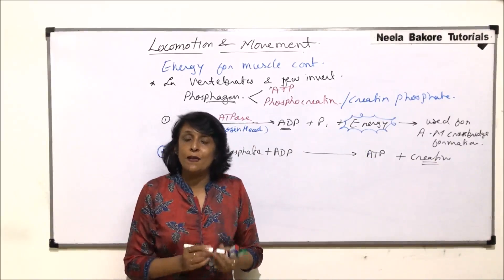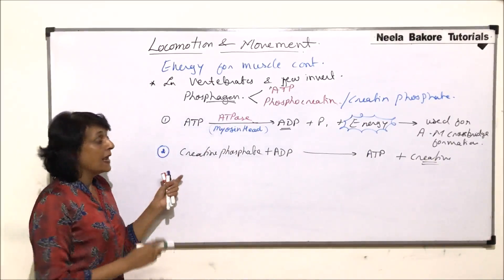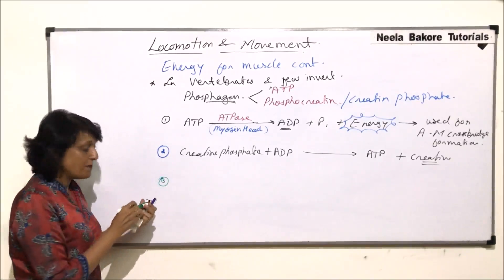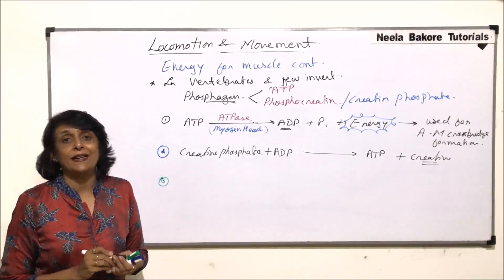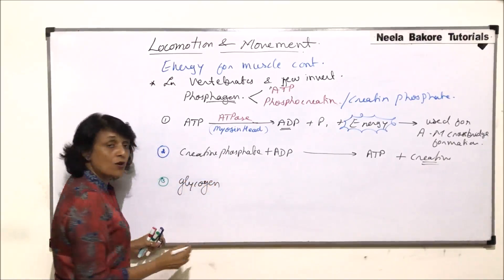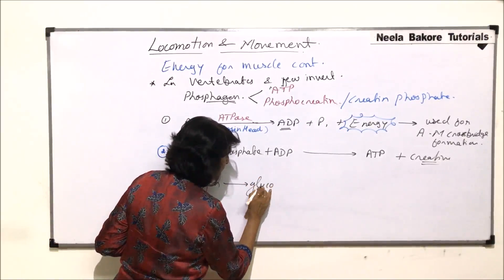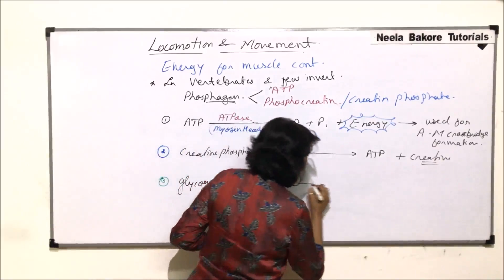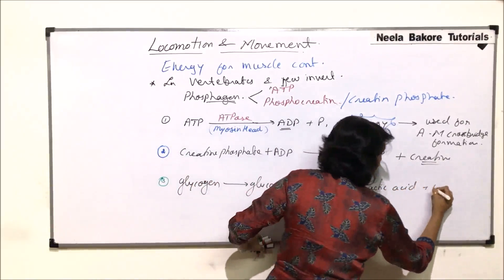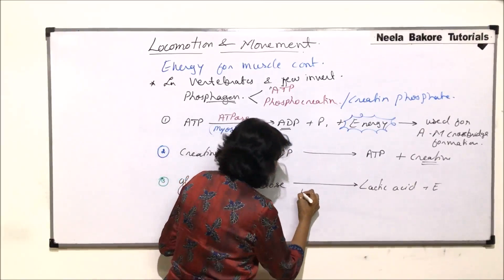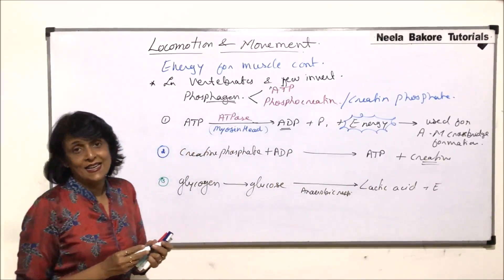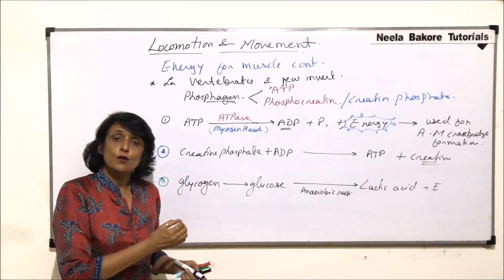If after this the ATP requirement continues to increase, step three is the anaerobic breakdown of glucose. In muscles, glycogen is stored, so glycogen is first converted into glucose, and then glucose is anaerobically broken down into lactic acid, with a small amount of energy also generated. This is anaerobic respiration.